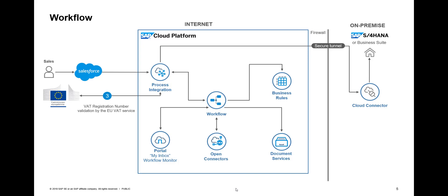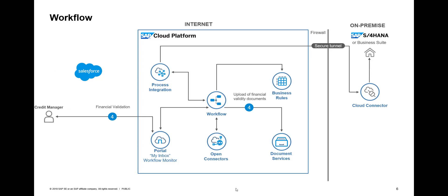We also get the address from the European Commission. In case of discrepancy between what the sales rep entered and what the European Commission provides, we use the data from the European Commission. Then the actual workflow starts: there will be a financial validation where the credit manager uploads validity documents — like bank information — using the Document Services of the Cloud Platform, and then approves or rejects the account creation.